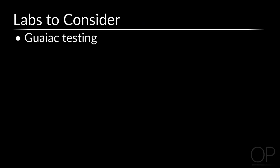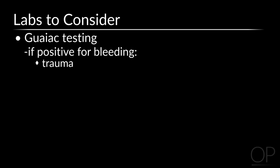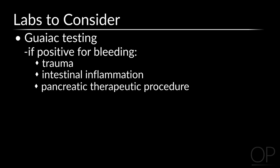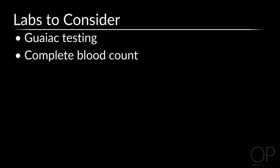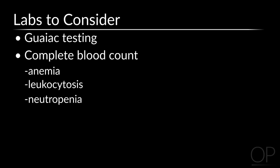Once you've evaluated the patient and determined that they are stable for the moment, you should consider ordering the following labs and imaging studies. If the patient is having stool output, you can send it for GUIAC testing. If positive, this may suggest occult bleeding, which can be seen in the setting of trauma, intestinal inflammation which can cause pancreatitis, or bleeding after a pancreatic therapeutic procedure such as a sphincterotomy. Getting a CBC will allow you to assess for anemia, leukocytosis, or neutropenia, which is important in oncology patients.